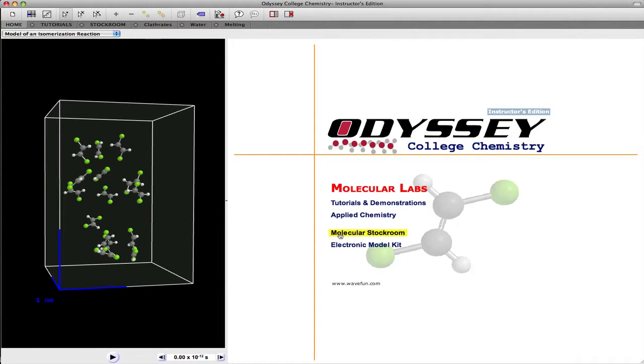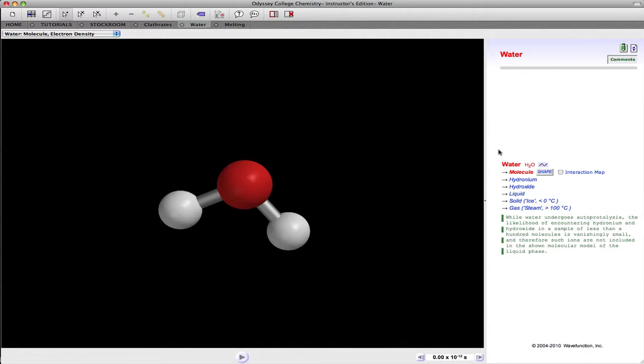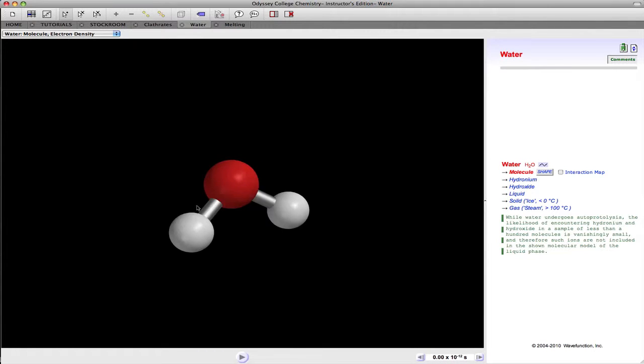Now, Odyssey has a collection of simulations in the molecular stockroom and a whole variety of different substances here. And under the common substances, there's a section of simulations dealing with water. And we've just got an ordinary ball and stick model of the water molecule here.